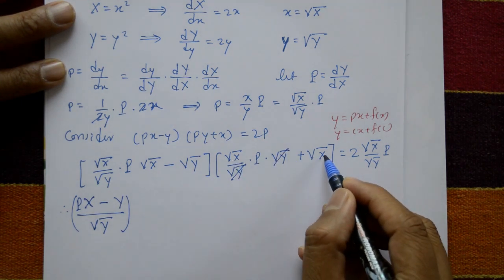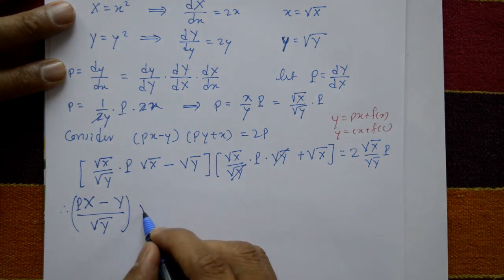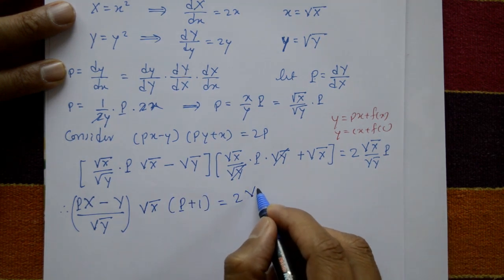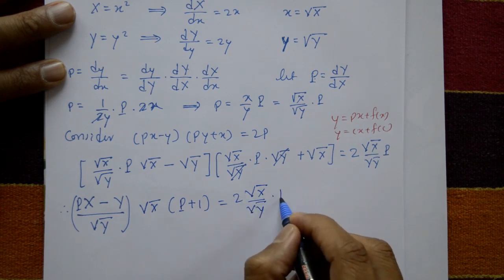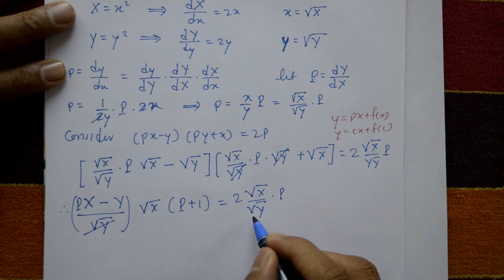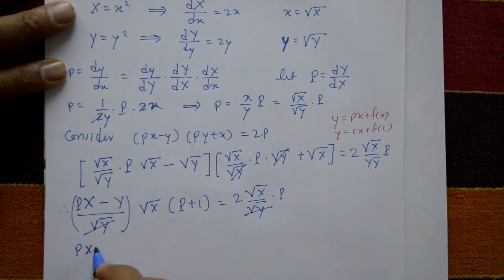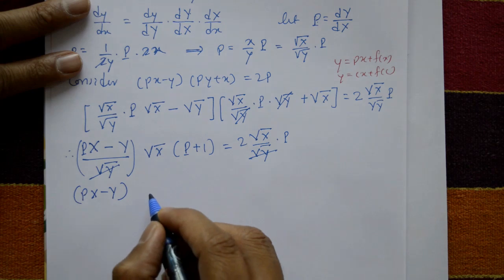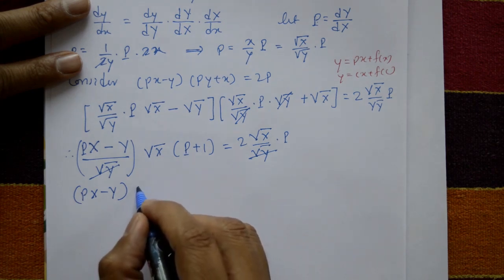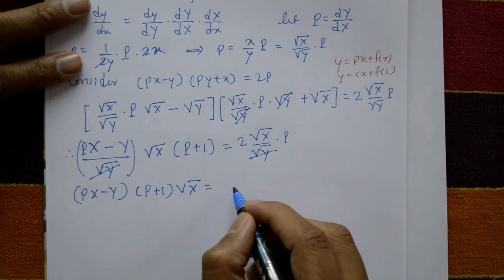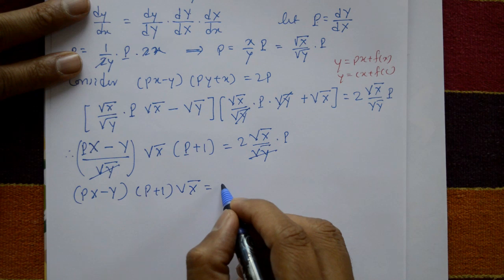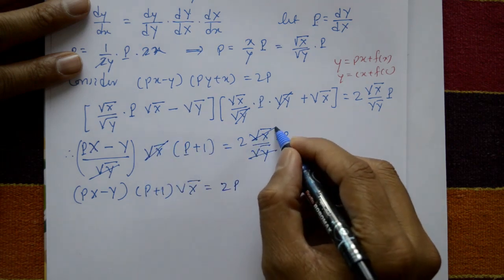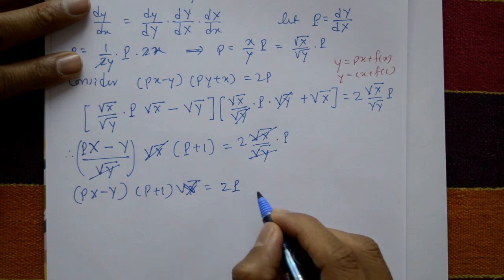So we have (PX - Y)/√Y · √X(P + 1) = 2P·√X/√Y. Both sides have √X and √Y, which cancel, leaving (PX - Y)(P + 1) = 2P. Cross multiplying and rearranging: PX - Y = 2P/(P + 1).